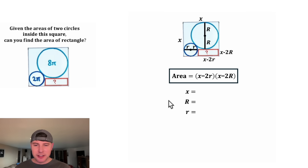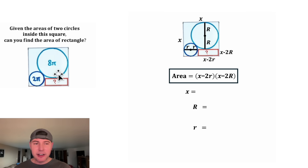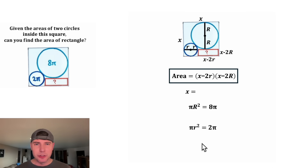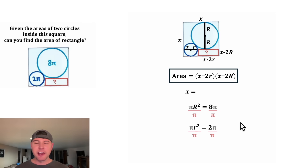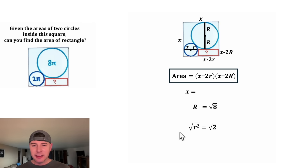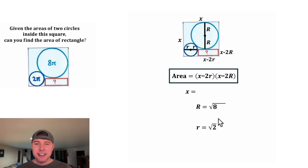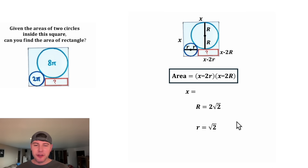Now all we've got to do is solve for X, big R, and little r. The big circle has an area of 8π, so we can say π big R squared equals 8π. And the area of the little circle is 2π, so we can say π little r squared equals 2π. From here, we can divide both sides of both equations by π, and all the π's cancel. Then we square root both sides of both equations. Big R is equal to the square root of 8, and little r is equal to the square root of 2. The square root of 8 equals the square root of 4 times 2, and the square root of 4 is 2, so big R simplifies to 2√2.